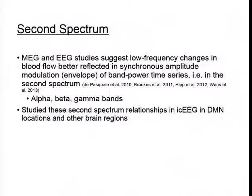This leads into a discussion about the second spectrum and why we wanted to look at that. It has been suggested in subsequent studies since Dominique's 2013 publication that the low-frequency changes in blood flow observed in the BOLD signal may actually be better reflected in synchronous amplitude modulation, or envelope correlations of the band power time series. We designated these envelope correlations as the 'second spectrum.' Studies using MEG, EEG, and intracranial EEG suggested we should be looking specifically at modulations of the alpha, beta, and gamma bands.